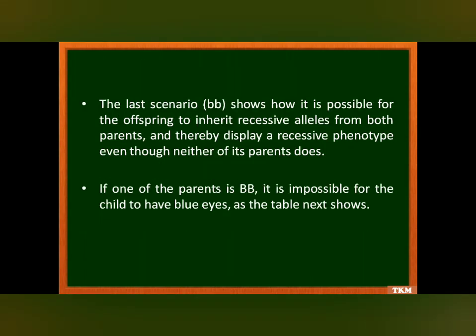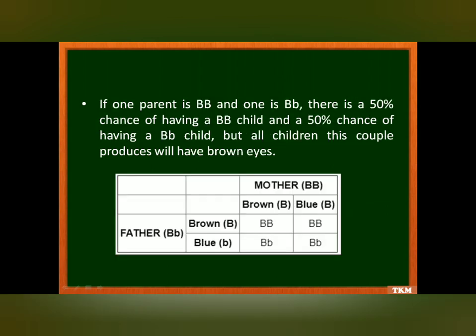If one parent has both dominant alleles — capital BB — then it is impossible for any child to have blue eyes. If the mother has both dominant alleles and the father has one dominant and one recessive allele, all children will have at least one dominant allele, meaning all kids will have brown eyes and none can have blue eyes.